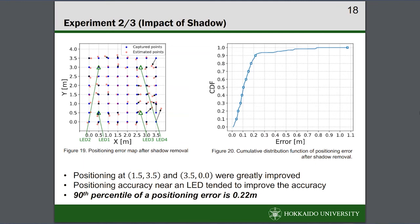On the left panel, you see the positioning error map of the second experiment after removing shadows. The point here is that the positioning results at two points, 1.5, 3.5 and 3.5, 0.0, were greatly improved. In addition, positioning in the neighborhood of LEDs tended to improve the accuracy. Figure 20 shows the cumulative distribution function of positioning error and achieved 22cm of 90th percentile.